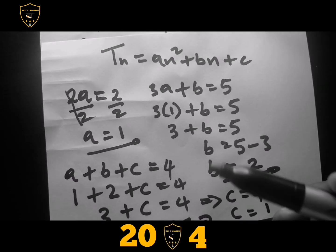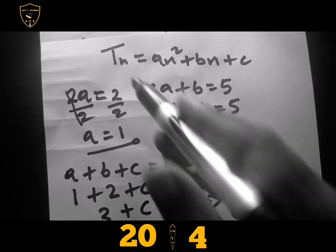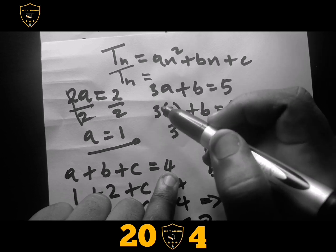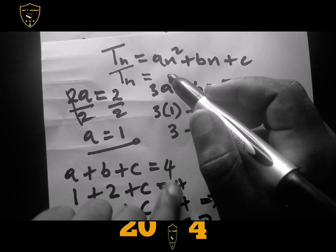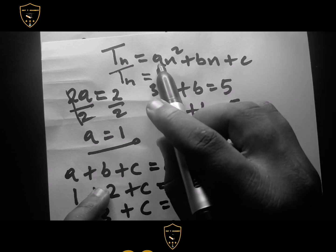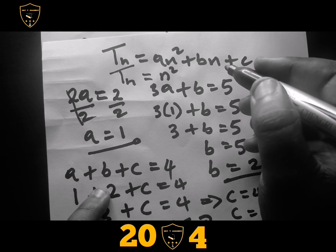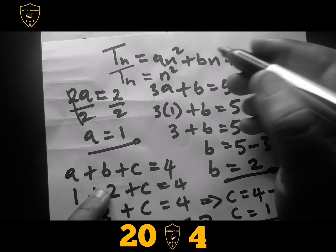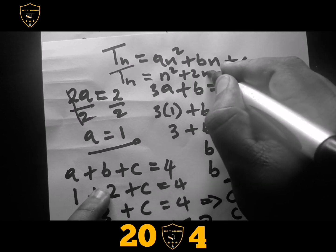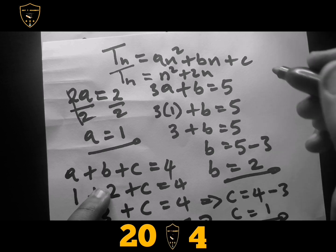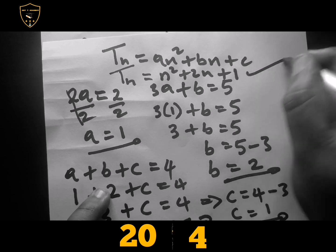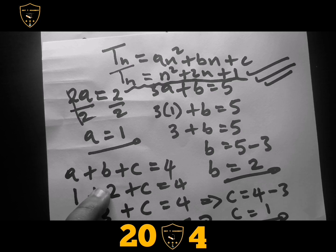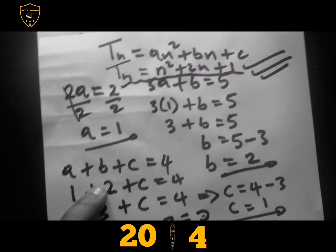Now let's plug these values into our formula. a is 1, so 1 times n squared is just n squared. b is positive 2, so we write plus 2n. c is 1, so plus 1. Therefore, the end term of this sequence is Tn equals n squared plus 2n plus 1.